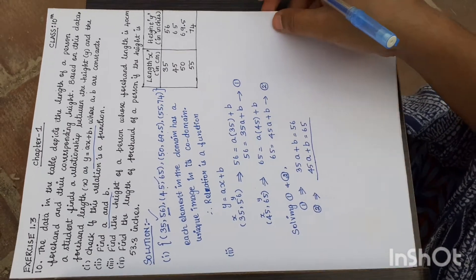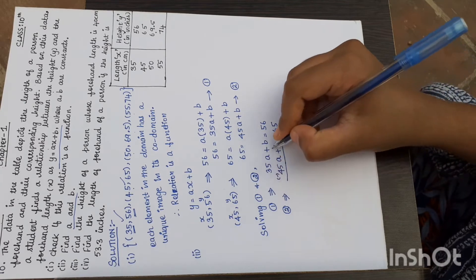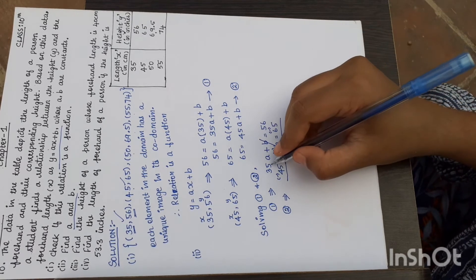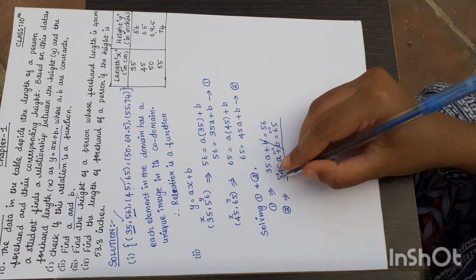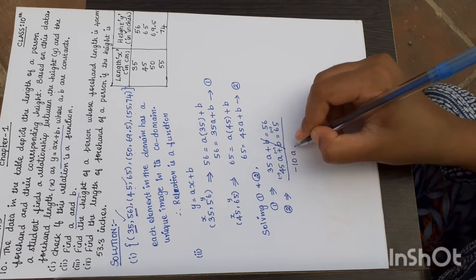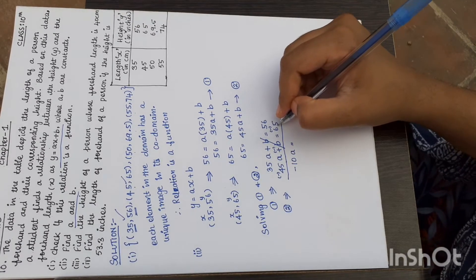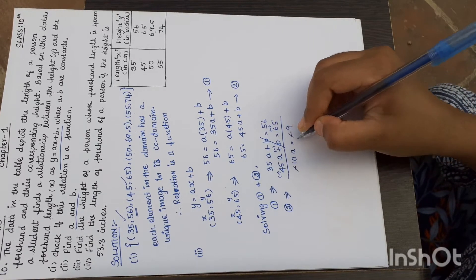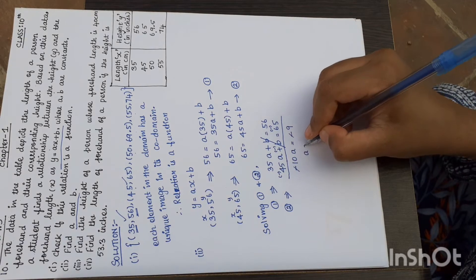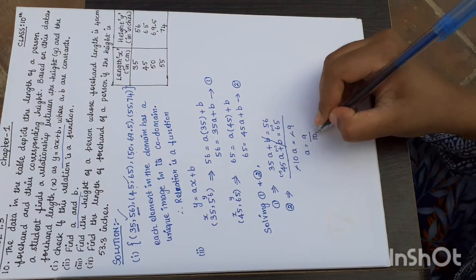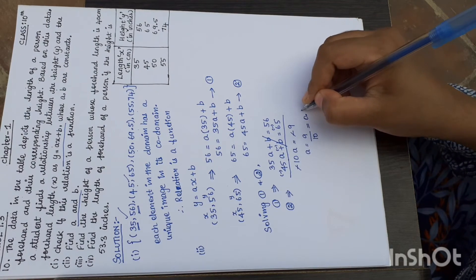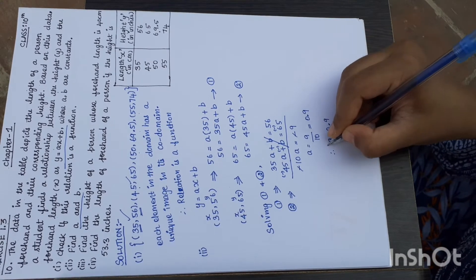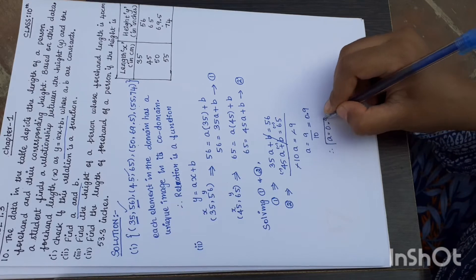Equation 1: 35a plus b equals 56. Equation 2: 45a plus b equals 65. Subtracting, b minus b equals 0. 35a minus 45a equals minus 10a. 56 minus 65 equals minus 9. So minus 10a equals minus 9, giving 10a equals 9. Therefore, a equals 9 divided by 10, which is 0.9. The a value is 0.9.